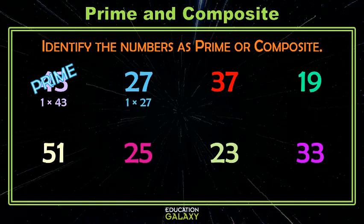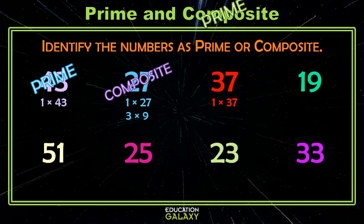27 has 1 and 27. It also has 3 and 9, so that one is, boom, composite. 37 has 1 and 37. I can't think of any others, so that one gets a prime stamp.